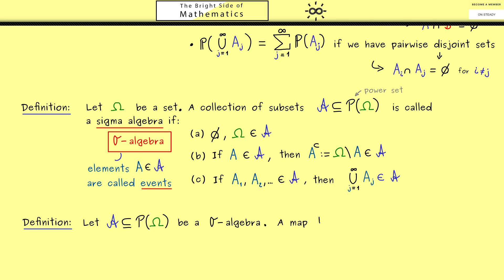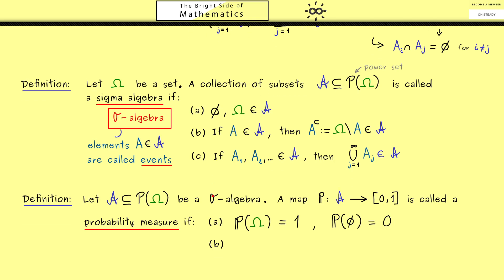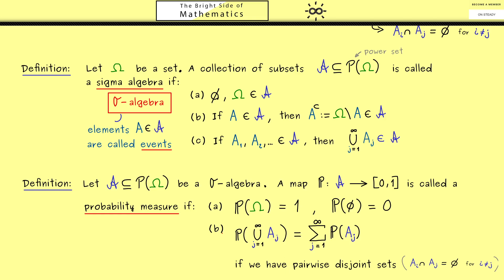Such a sigma algebra is the domain for the probability measure we now define. We fix a sample space omega and a sigma algebra A. Then a map P with domain A and codomain the interval [0,1] is called a probability measure if it fulfills 2 properties. The first: the probability of the whole space is 1 and the probability of the empty event is 0. The second is what we call sigma additivity, and for this we need pairwise disjoint sets.